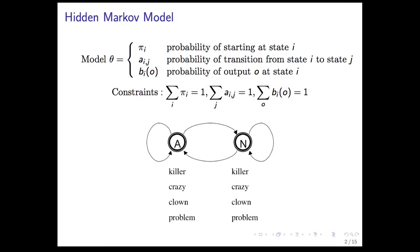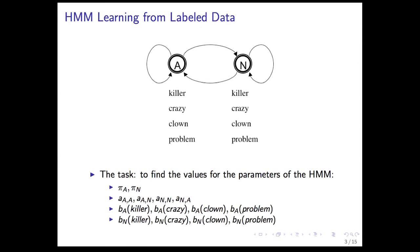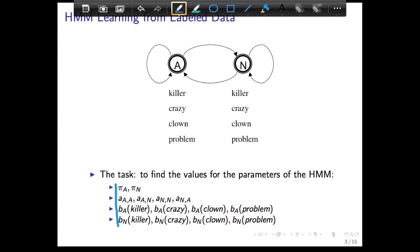We're going to use the same toy HMM running example we've been using before. Our task is to find the values for the parameters of the HMM: pi sub a, pi sub n for start probabilities; transition probabilities going from a to n, a to itself, n to n, n to a; and the emission probabilities. Finding all of these values constitutes learning. If you find these values, you have an HMM you can use as a parser or as a language model.